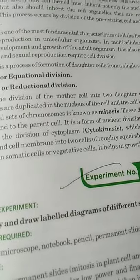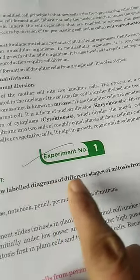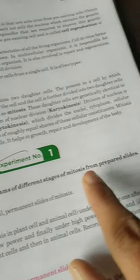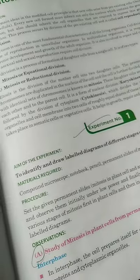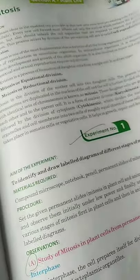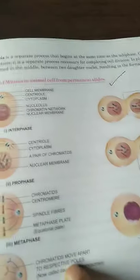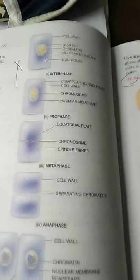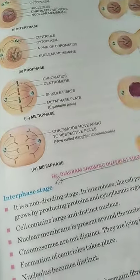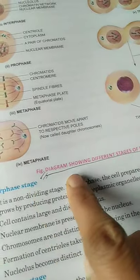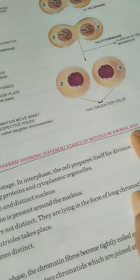First experiment — experiment number one — is to identify and draw labeled diagrams of different stages of mitosis from prepared slides. You have to draw only the diagrams of different stages of mitosis in the case of animals only. You have to draw only these diagrams; the other diagrams you do not need to draw.